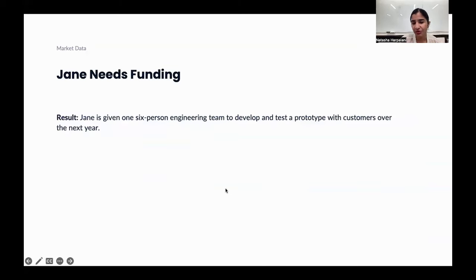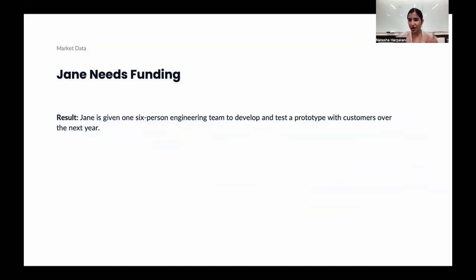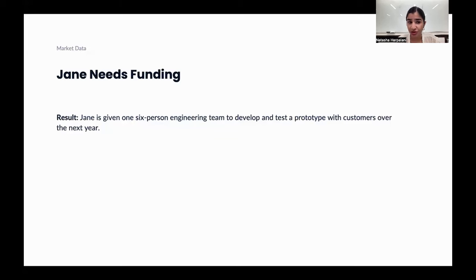The result of being able to share these statistics with her leadership team results in Jane being given a six-person engineering team to develop and test a prototype with customers over the next year. Of course, this is a made-up example, but I have personally used very similar tactics and really tried to use similar types of market findings to help make a decision on what market to enter and what type of product to focus on, but also use that to communicate to my leadership.